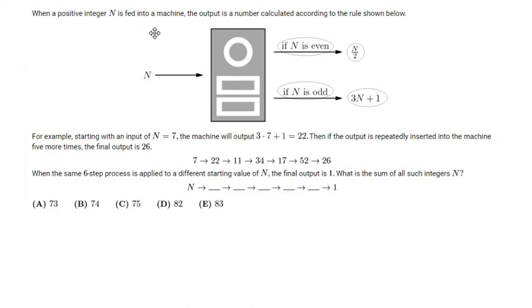When a positive integer n is fed into a machine, the output is a number calculated according to the rule shown below. So this is the rule. If n is even, the output is n over 2. If n is odd, the output is 3n plus 1, which both, by the way, are positive integers.